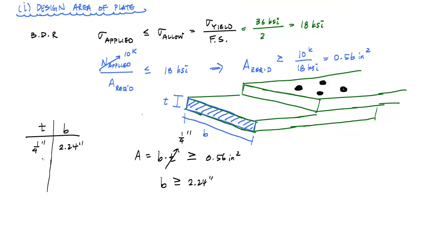and B has to be greater than or equal to 2.24 inches. I would have this 2.24 inches. And then I can also check it for a half-inch thick plate and a 3-quarter-inch thick plate. And that would tell me if I just go ahead and I repeat that same process, I would need a width of 1.12 inches for a half-inch plate and 0.747 inches.